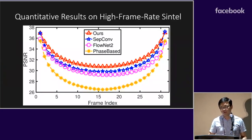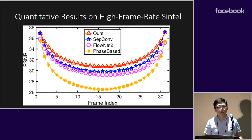Now, I'd like to show some quantitative results where 31 intermediate frames are generated. The higher curve, the better it is. We can see our approach consistently generates better video interpolation results, outperforming all other approaches at each time step.